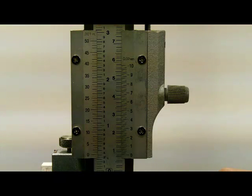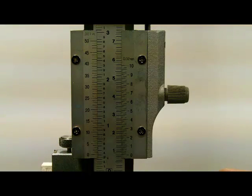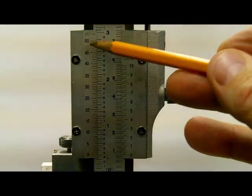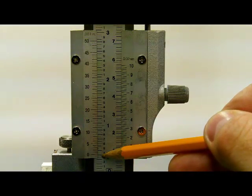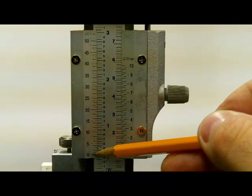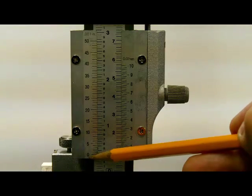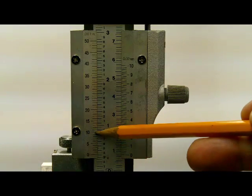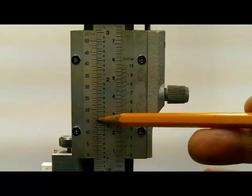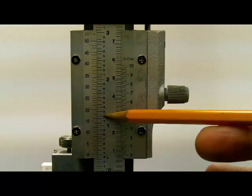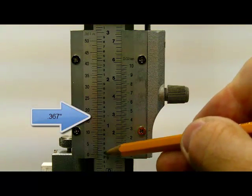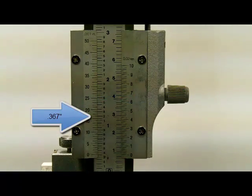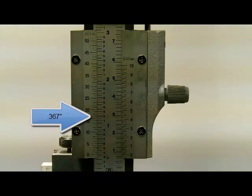Remember on the vernier caliper each one was 25, but we only have one here, so each one is 50. So 0.350, and you can see the zero on the movable scale is just slightly past it. So we come up the movable scale, the vernier scale, and we look for a line that lines up. So 10, 15, 16, 17. The 17 lines up with the two here. So 300 thou, 350 plus 17, so the size is 0.367 inches.